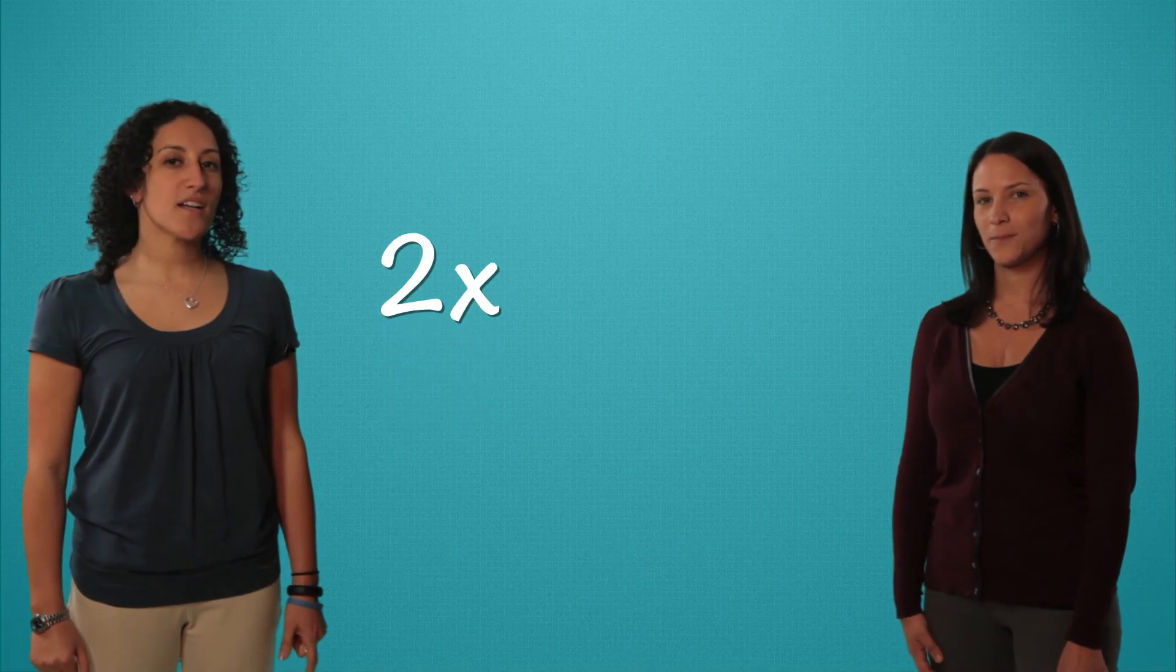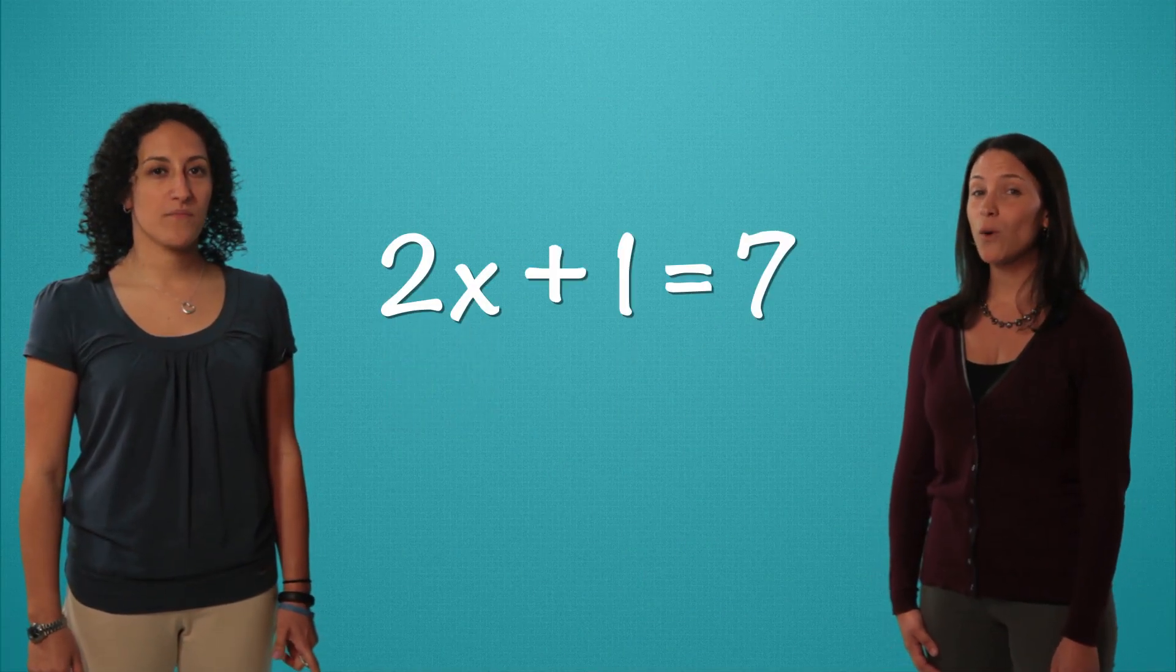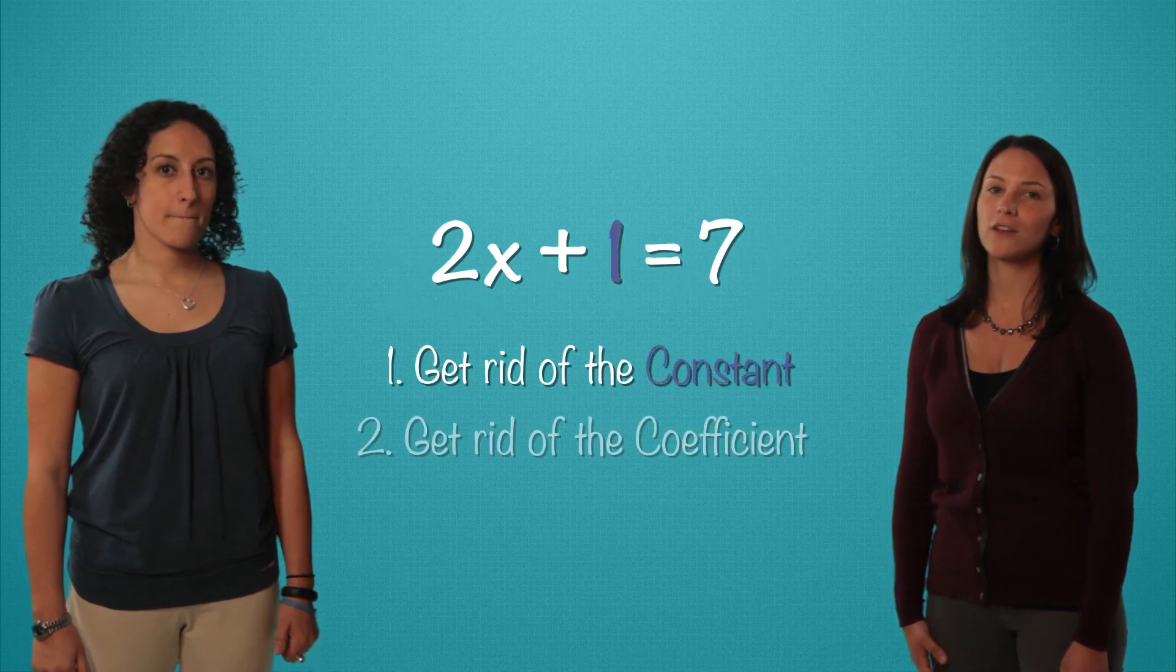Here's our equation 2x plus 1 equals 7. There's always two steps: get rid of the constant and then get rid of the coefficient.